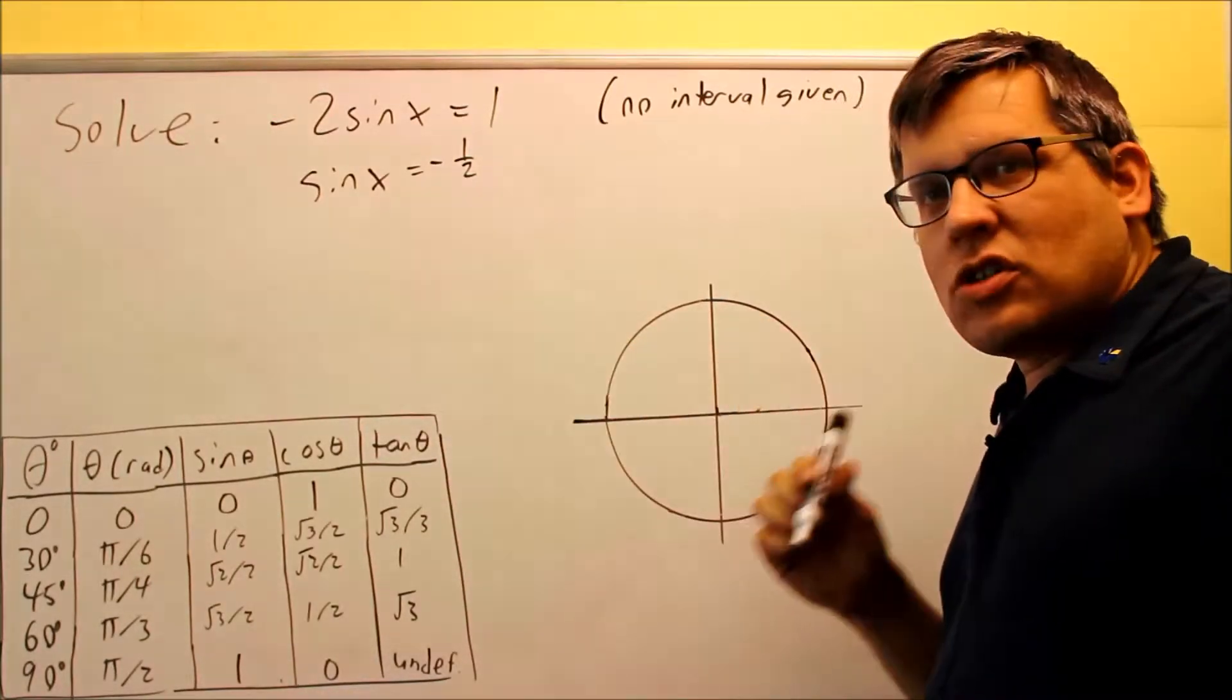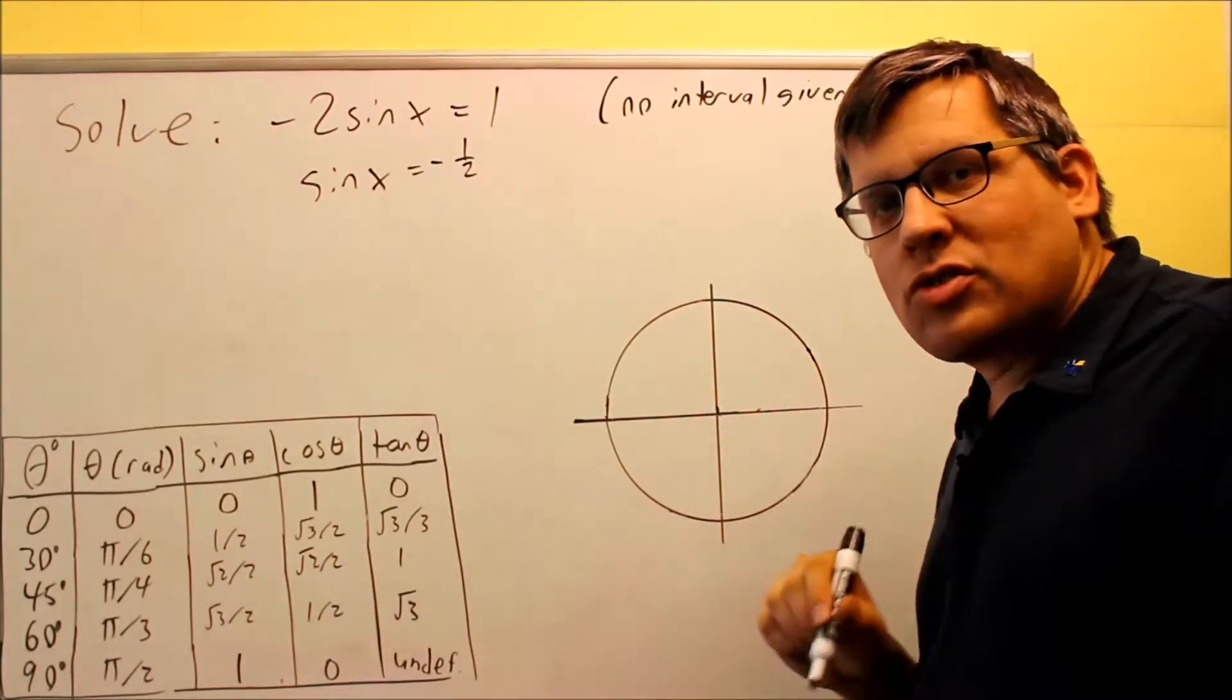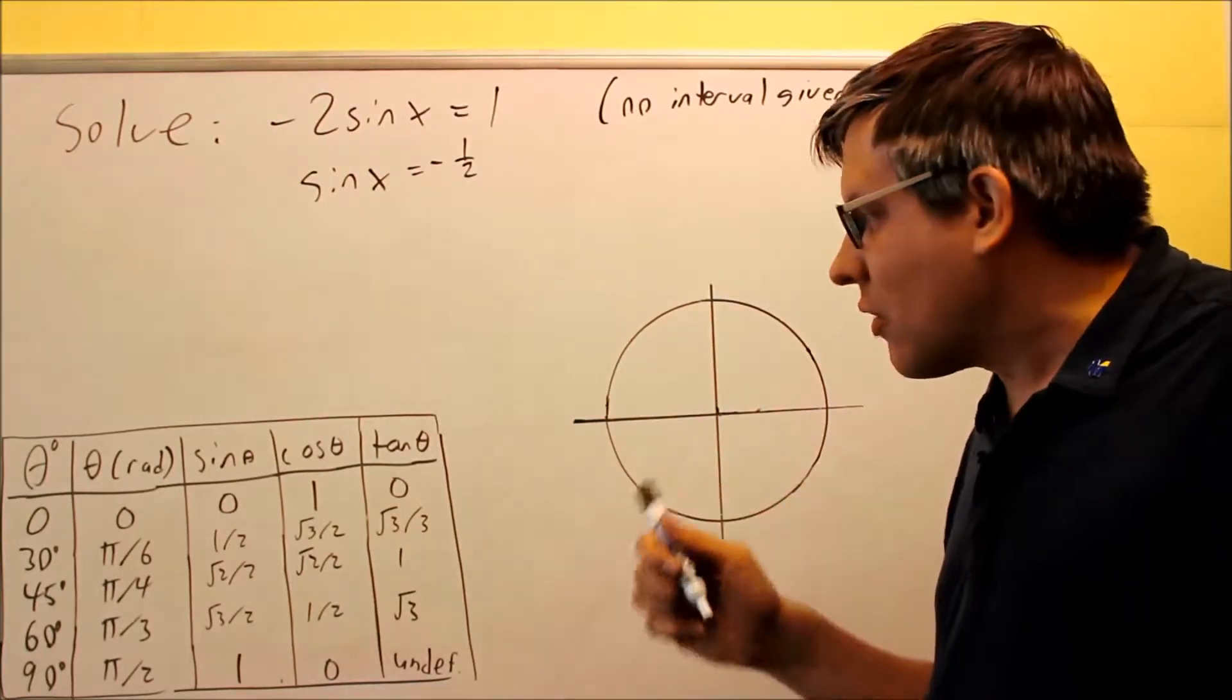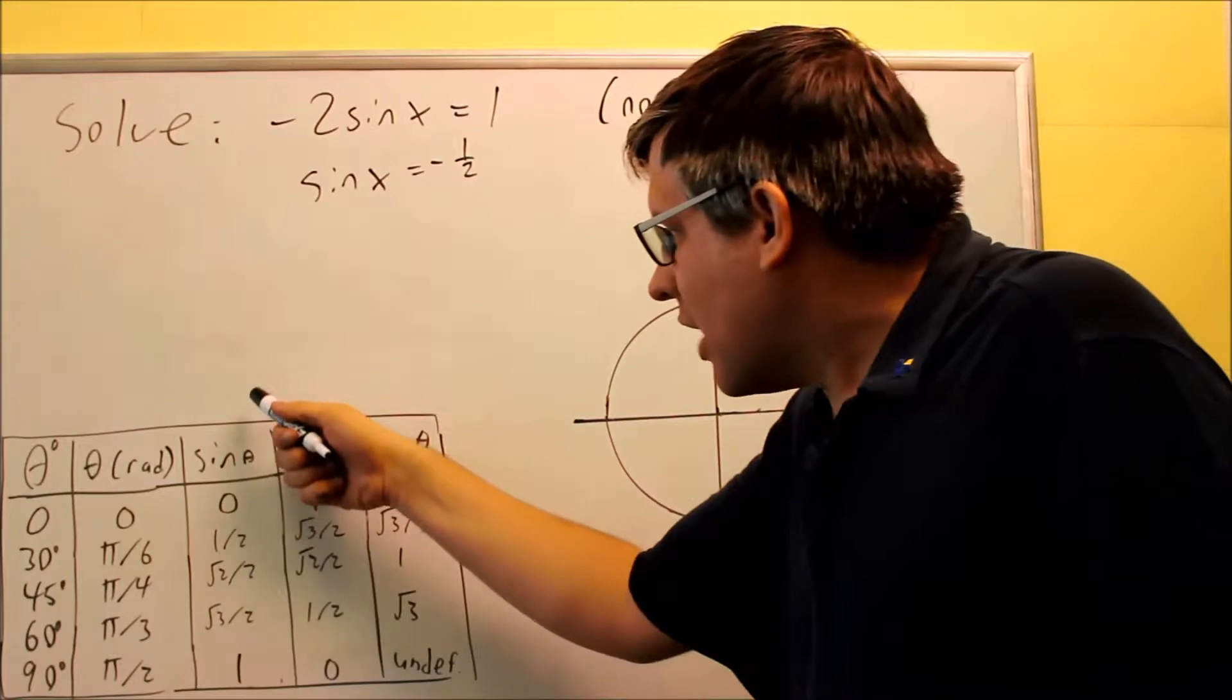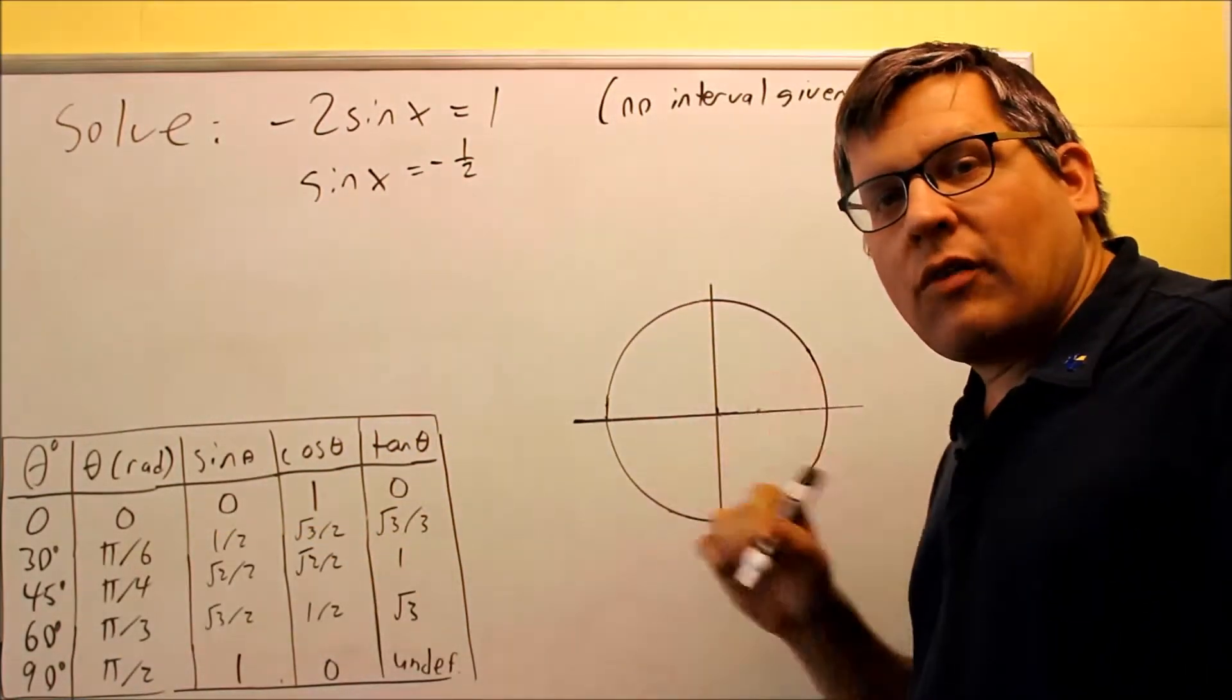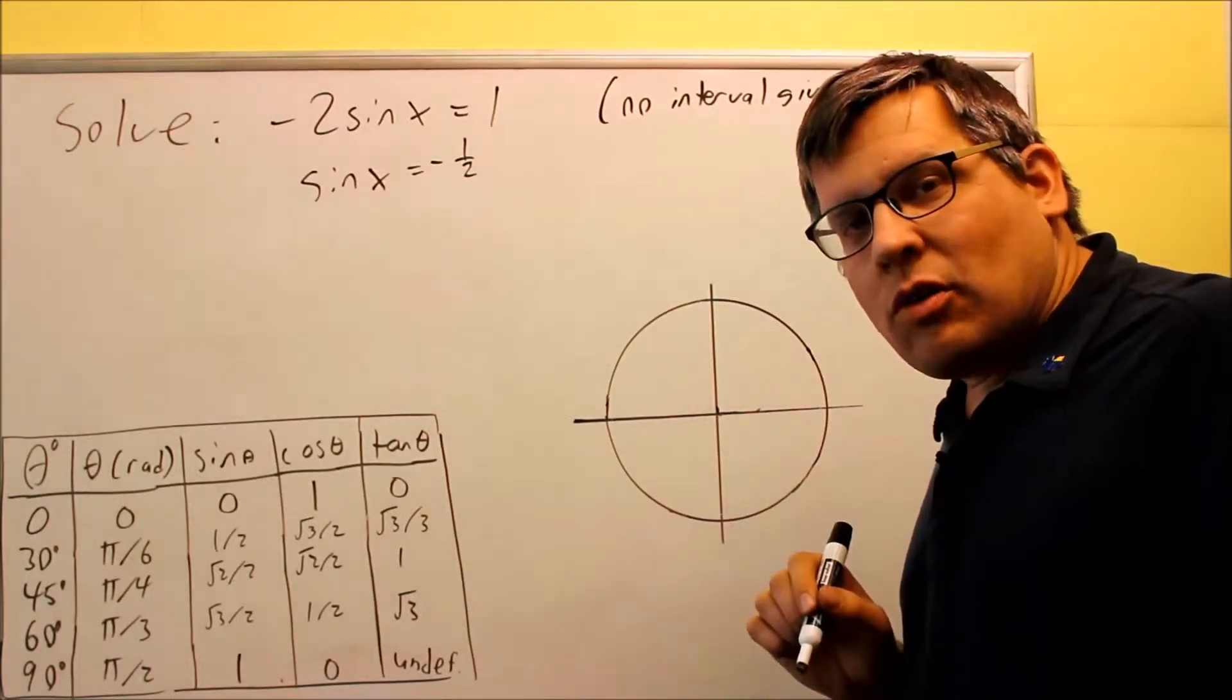Negative 1 half, we need to actually first see what kind of reference angle we're talking about. We're going to ignore the negative sign and just look for 1 half with sine. Sine with 1 half right here, that's 30 degrees. So I know that I have a 30 degree reference angle.